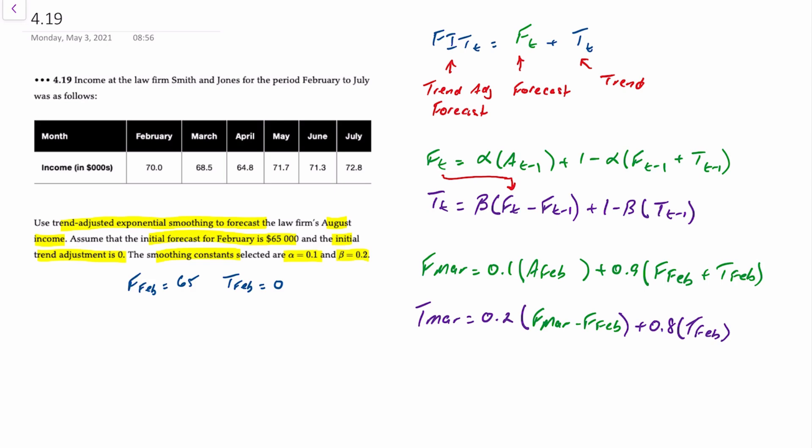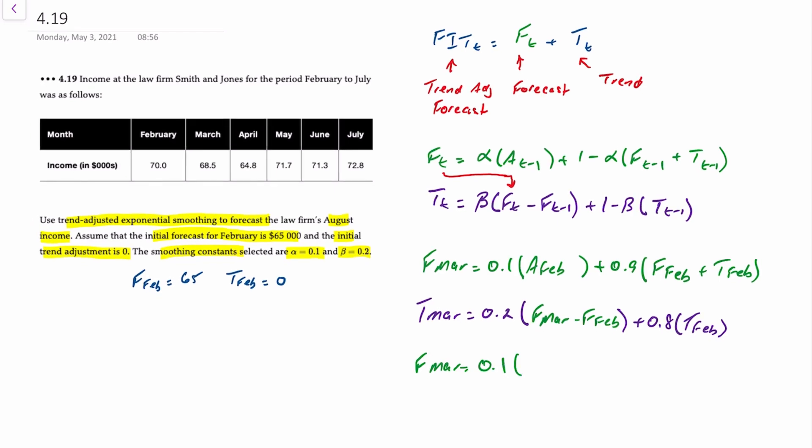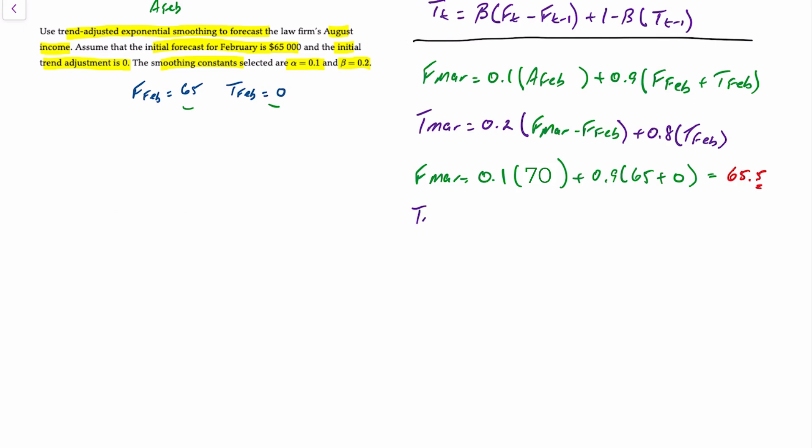Applying numbers to our data, the forecast for March is 0.1 times an actual income for February of 70, plus 0.9 times the forecast for February of 65, plus an initial trend of 0. That equals 65.5 with some rounding. The trend for March is equal to 0.2 times 65.5 minus 65, plus 0.8 times 0, and that provides an answer of 0.1.